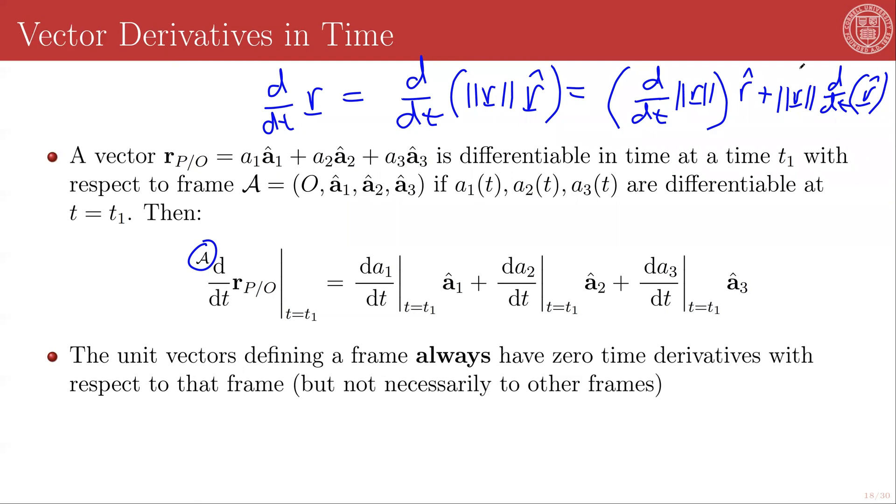And the second part of our product rule, the vector derivative of each of these A hat one, A hat two, A hat three, will be zero because we're differentiating with respect to frame A.